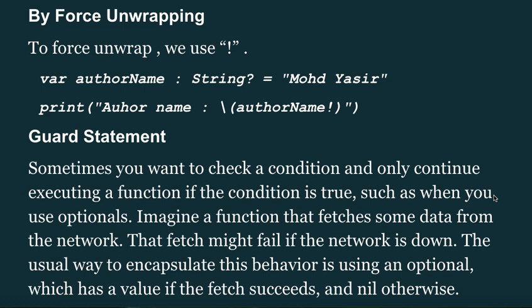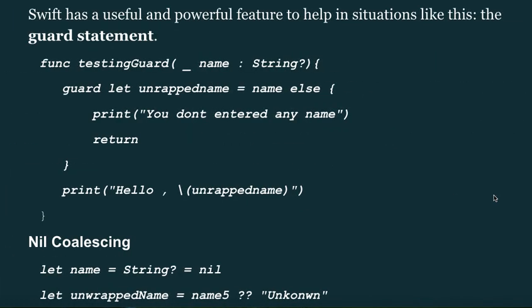Guard statement: sometimes you want to check a condition and only continue executing a function if the condition is true, such as when you use optionals. Imagine a function that fetches data from the network — the fetch might fail if the network is down. The usual way to encapsulate this is using an optional. Swift has a useful feature for this: the guard statement. Example: `func testing(_ name: String?) { guard let unwrappedName = name else { print("You didn't enter any name"); return }; print("Hello \(unwrappedName)") }`.